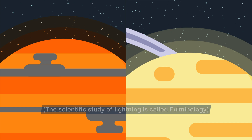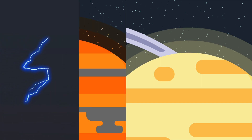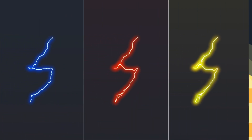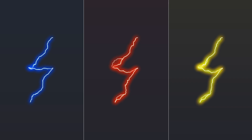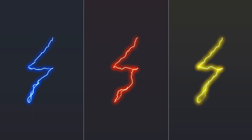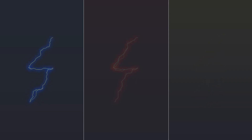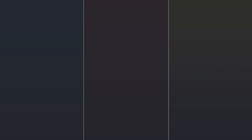Lightning bolts come in many different colors — it might be blue, red, or yellow depending on the circumstances. Lightning bolts don't just heat the air around them to extreme temperatures; they also transport massive amounts of energy. They carry energy measuring several hundred billion watts, and this is what makes lightning strikes so dangerous.